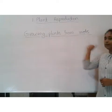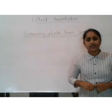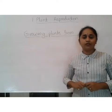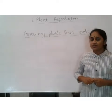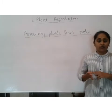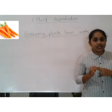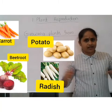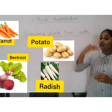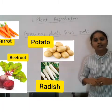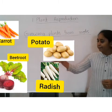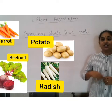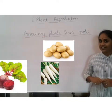Growing plants from roots: there are many plants that can grow with the help of roots. For example, carrot, potato, radish, dahlia, beetroot, etc. If you cut the top portion of the carrot and plant it in the ground, a new plant will grow from it.